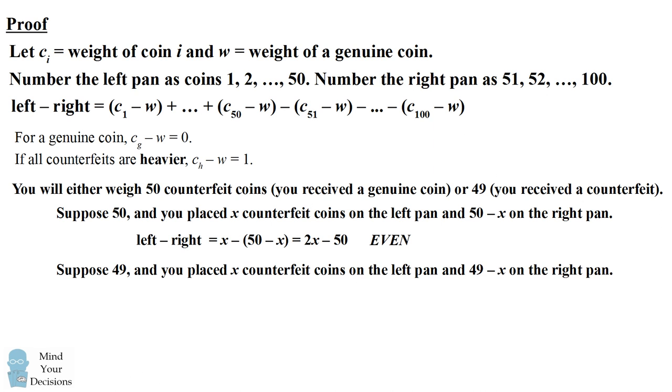If instead there were 49 counterfeit coins, suppose we placed x on the left pan and 49 minus x on the right pan. We can again calculate that left minus right will equal x minus 49 minus x. And this simplifies to be 2x minus 49. The only difference here is that 49 is an odd number. We have an even number 2x minus an odd number, which will therefore give us an odd result.